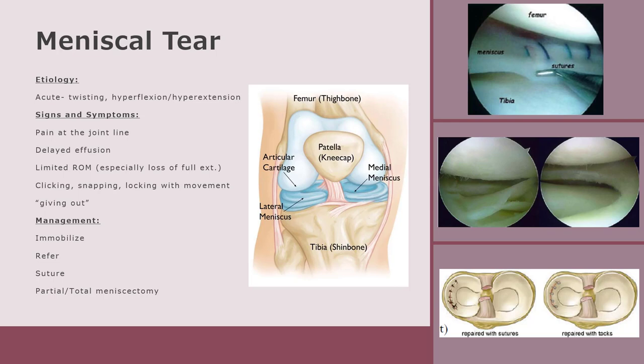Management for meniscal injuries includes immobilization and referral to an orthopedic specialist. If it is a small tear, the injury may be managed by treating the symptoms. If it is a more serious tear, surgery may be required, including suturing the damaged meniscus. Unfortunately, there are portions of the meniscus that are avascular, meaning there is no good blood flow to that area. If an avascular portion is damaged, the protocol might include removing part or all of the damaged tissue in a procedure known as a meniscectomy.